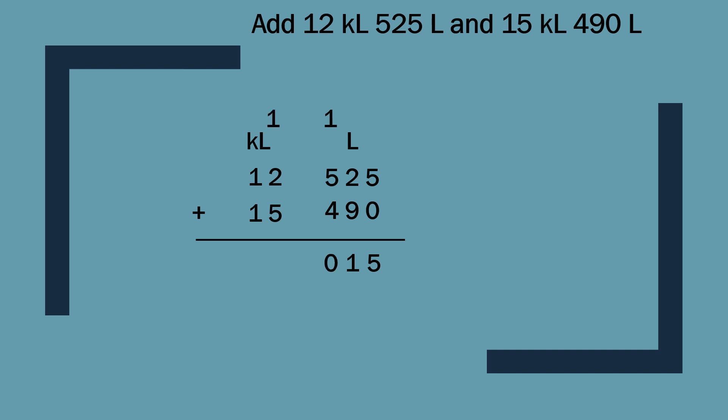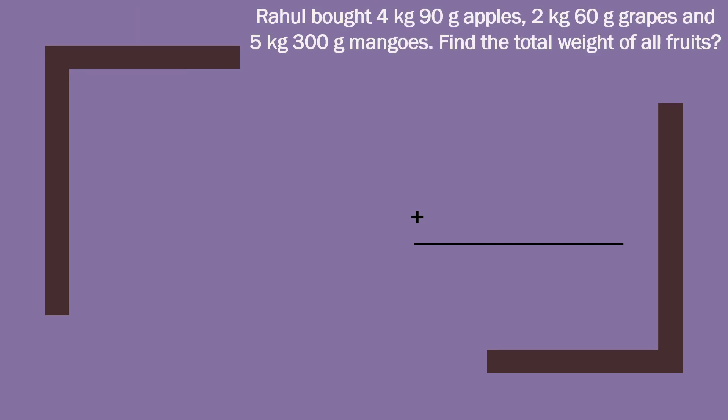2 plus 1 is 3, 3 plus 5 is 8, and 1 plus 1 is 2. So it is 28 kilolitre 15 liter. Let us do one word problem: Rahul bought 4 kilogram 90 gram apples, 2 kilogram 60 gram grapes, and 5 kilogram 300 gram mangoes. Find the total weight of all fruits.